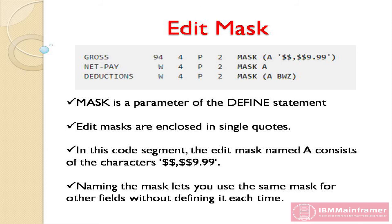Names can be any letter from A to Y. In the sample program, we named the mask used on the gross field A. Then we specified the letter A on the net pay and deductions fields instead of coding the mask again. Remember, multiple parameters and sub-parameters are enclosed in parentheses. To suppress all-zero values from printing, simply code BWZ after the mask or mask name. Because some employees in our report can have zero deductions, we included BWZ — it is abbreviated as 'blank when zero'.